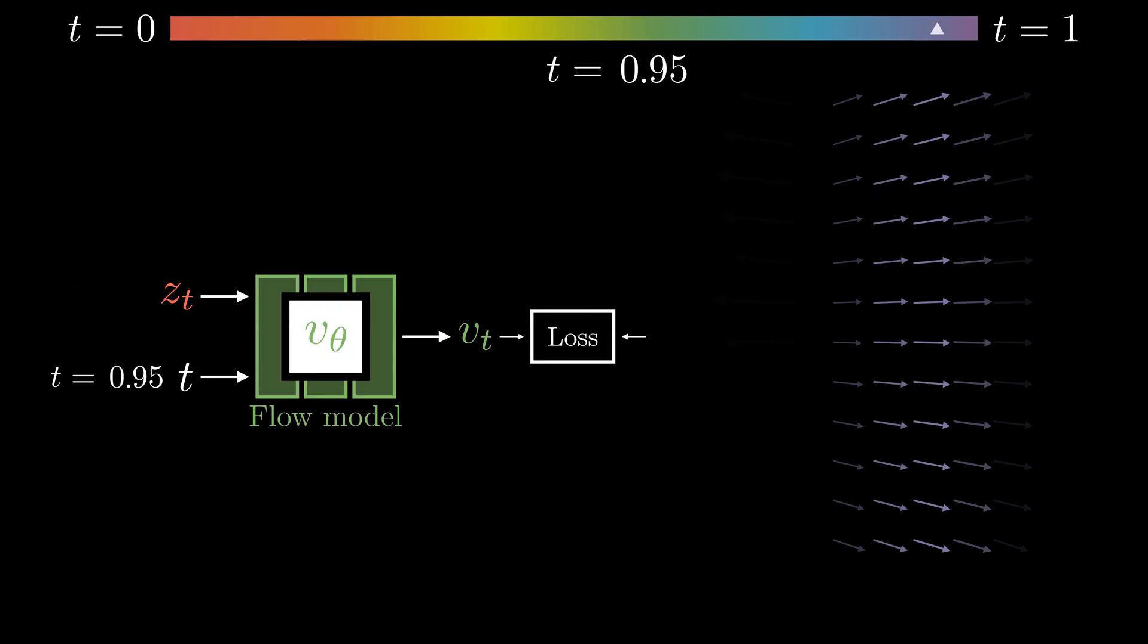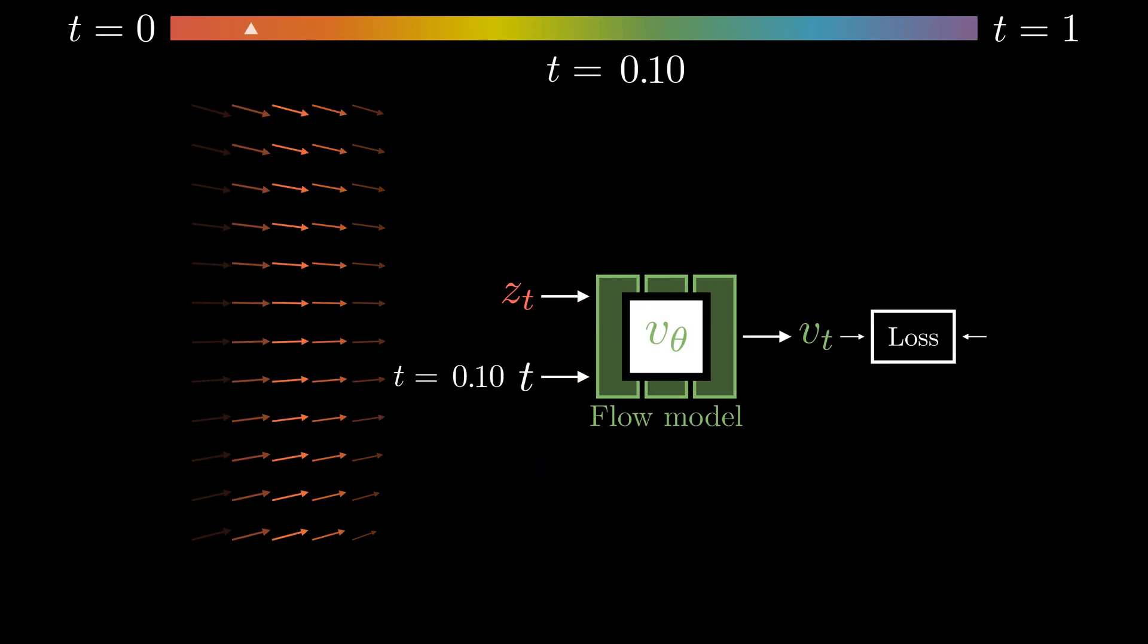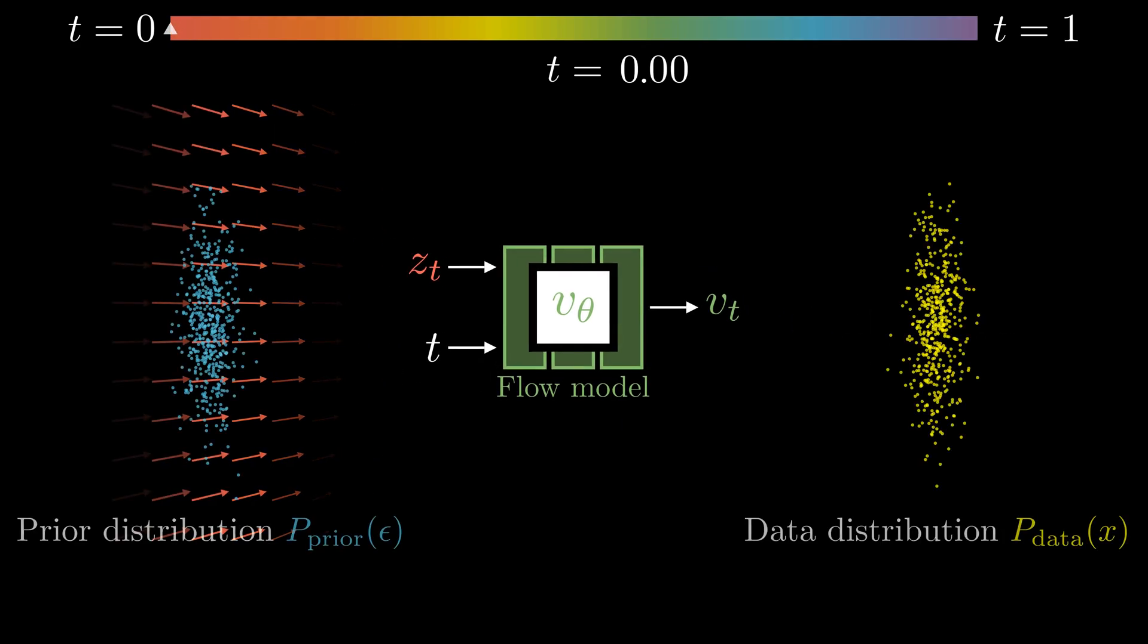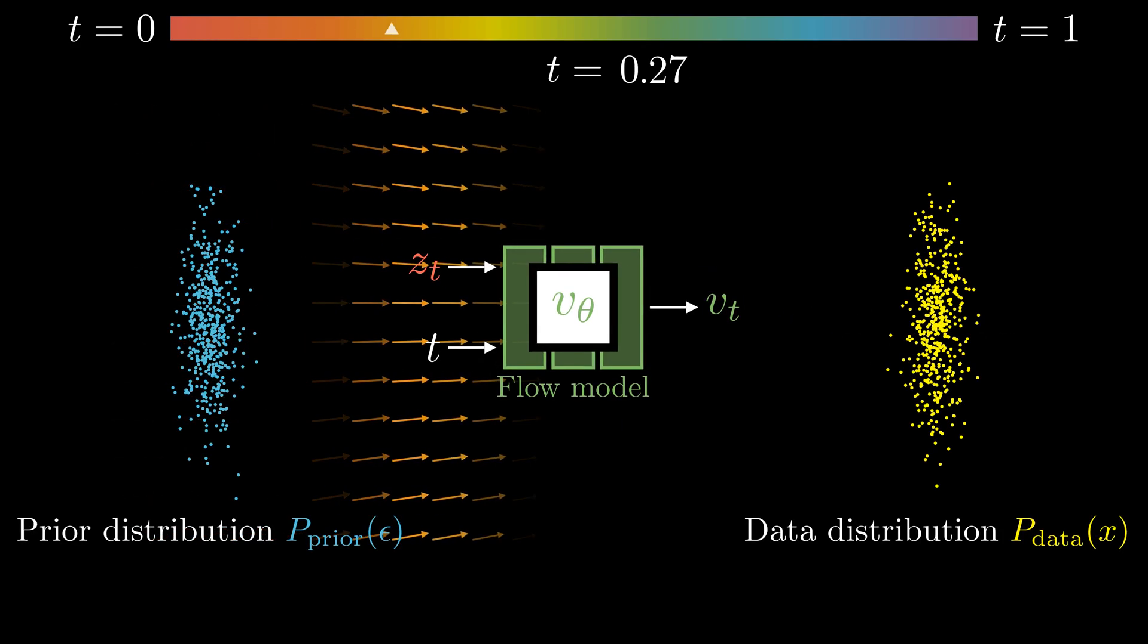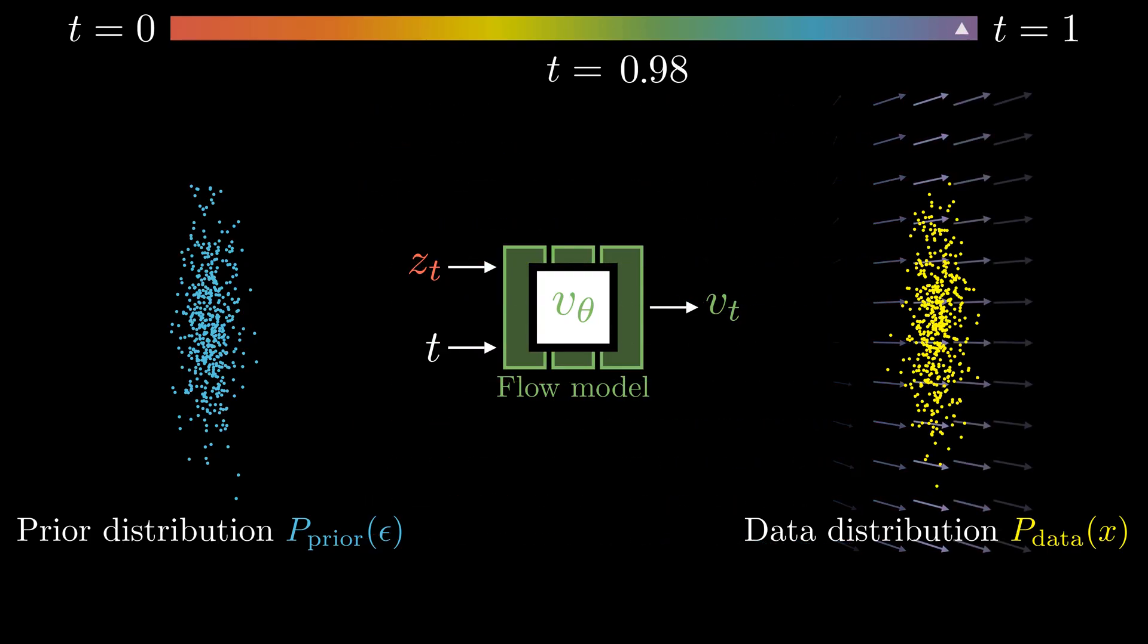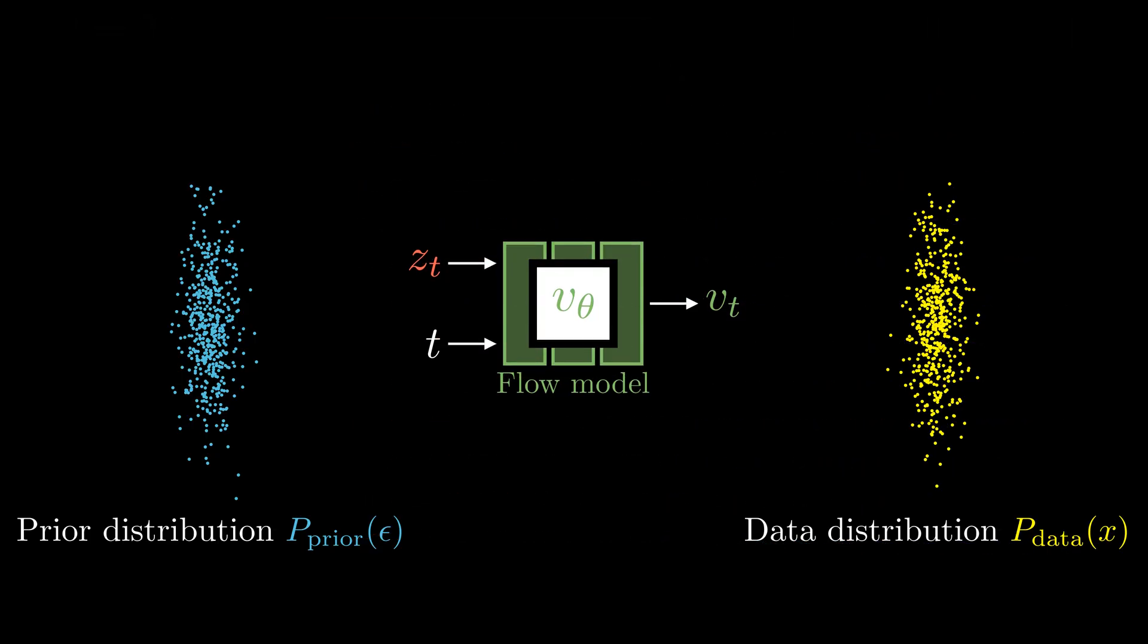Here are several examples. Once we train our flow model, we can use it to generate new data samples by following the predicted velocity vectors. But there is a problem. We don't know what that time-varying velocity field is. If we know that, we don't even need a neural network, right?